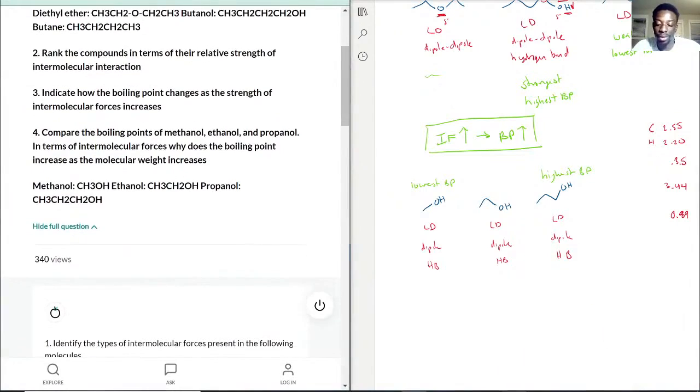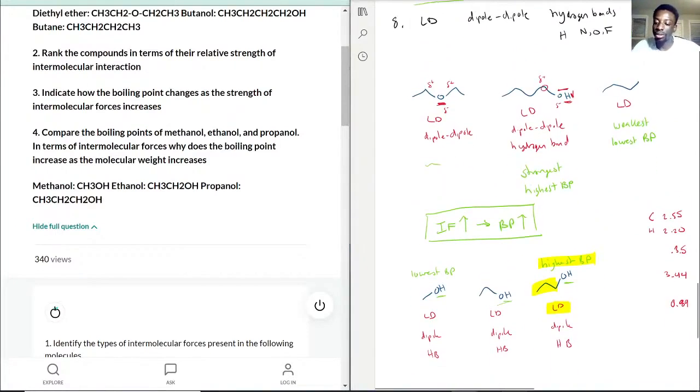In terms of intermolecular forces, you can thank the London dispersion force as to why this one would be the higher boiling point. You notice it doesn't change too much, but you cannot predict empirically the exact number of the boiling point. But based on the fact that this is a bigger molecule, you can thank the London dispersion forces that this has a higher boiling point because everything else is the same. You see hydrogen bonds and dipole-dipole.